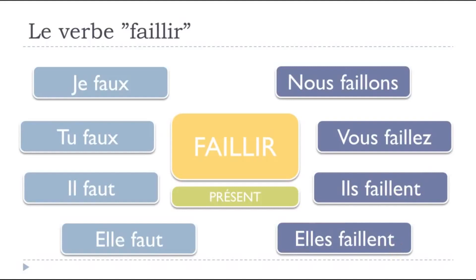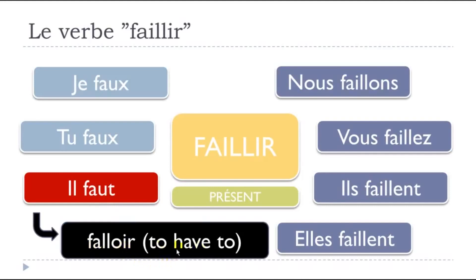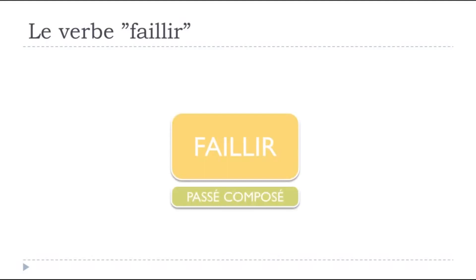If you look carefully, you'll notice something quite strange: the il faut form is the same as the verb falloir — 'to have to.' Falloir is impersonal, so it only has this il form. When you encounter il faut in a text, in most cases it's connected to falloir, but keep in mind it might be connected to faillir, even if we don't use the present form that often.